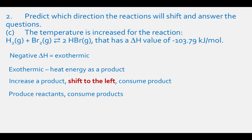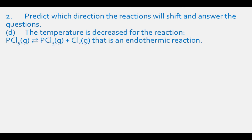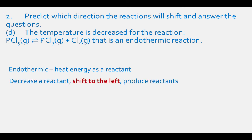For part D, we decrease the temperature for an endothermic reaction. Endothermic reactions have heat energy as a reactant. If we decrease a reactant, then we shift the reaction to the left in order to produce more of that reactant — the heat energy. We will then consume some products and produce some reactants.